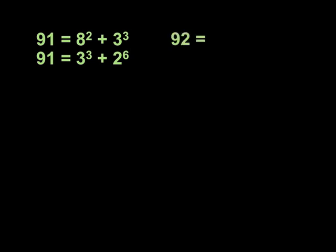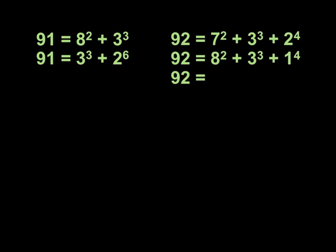92 is also special because it is equal to 7 squared plus 3 cubed plus 2 to the fourth. Notice all of the exponents are different. It's also equal to 8 squared plus 3 cubed plus 1 to the ninth and 3 cubed plus 2 to the sixth plus 1 to the ninth.